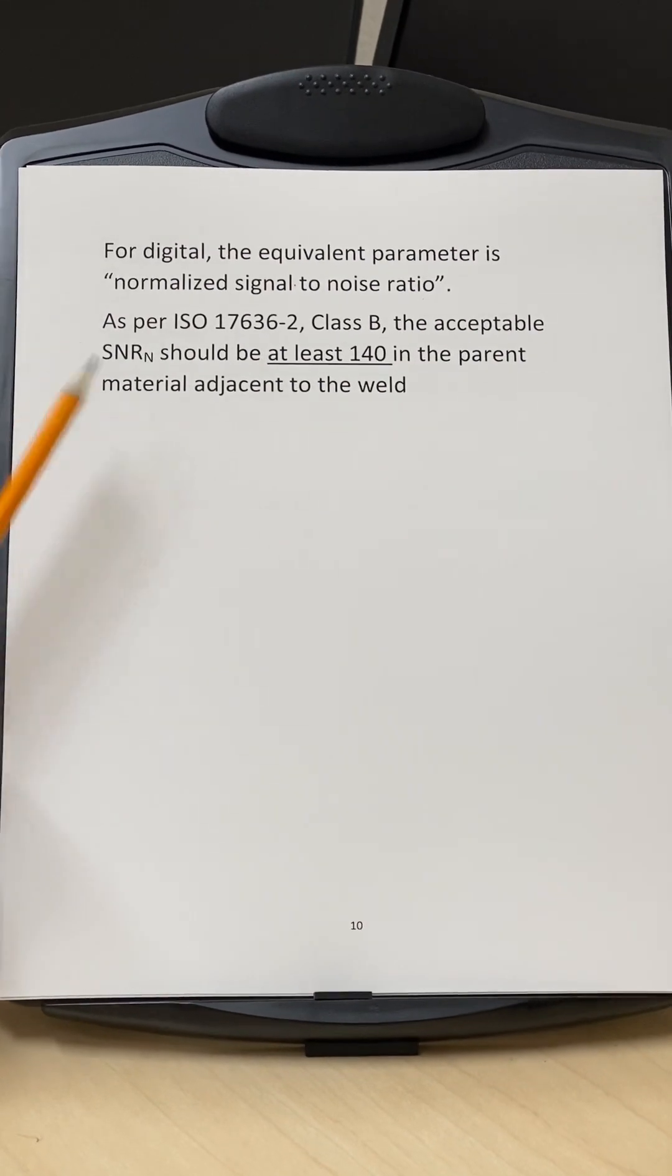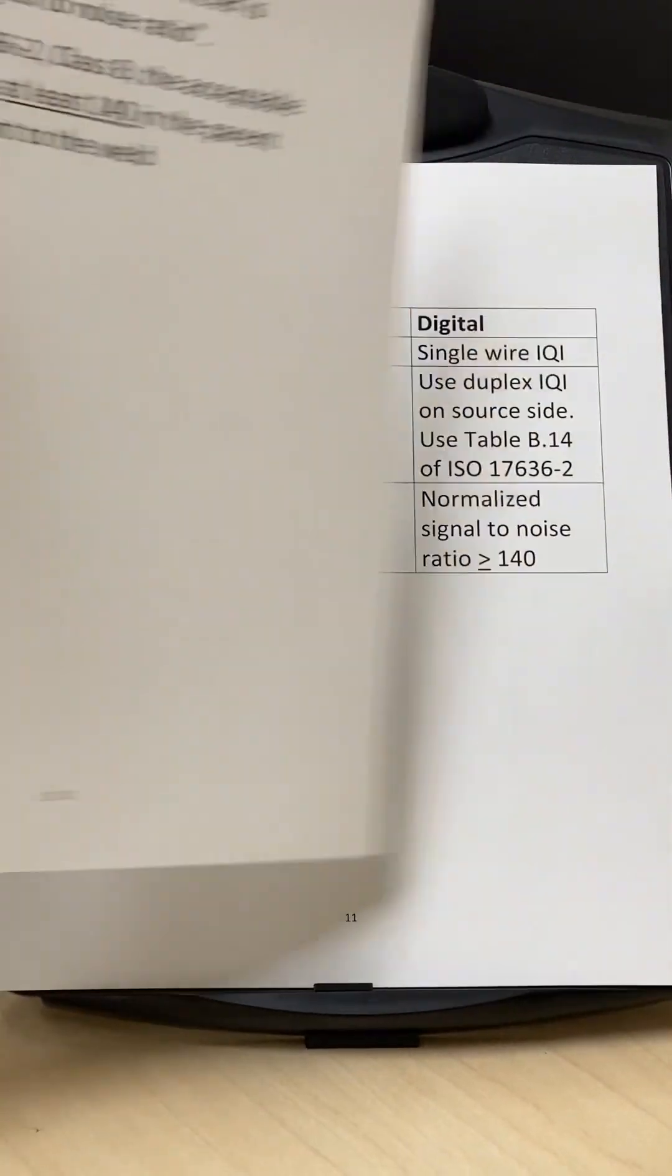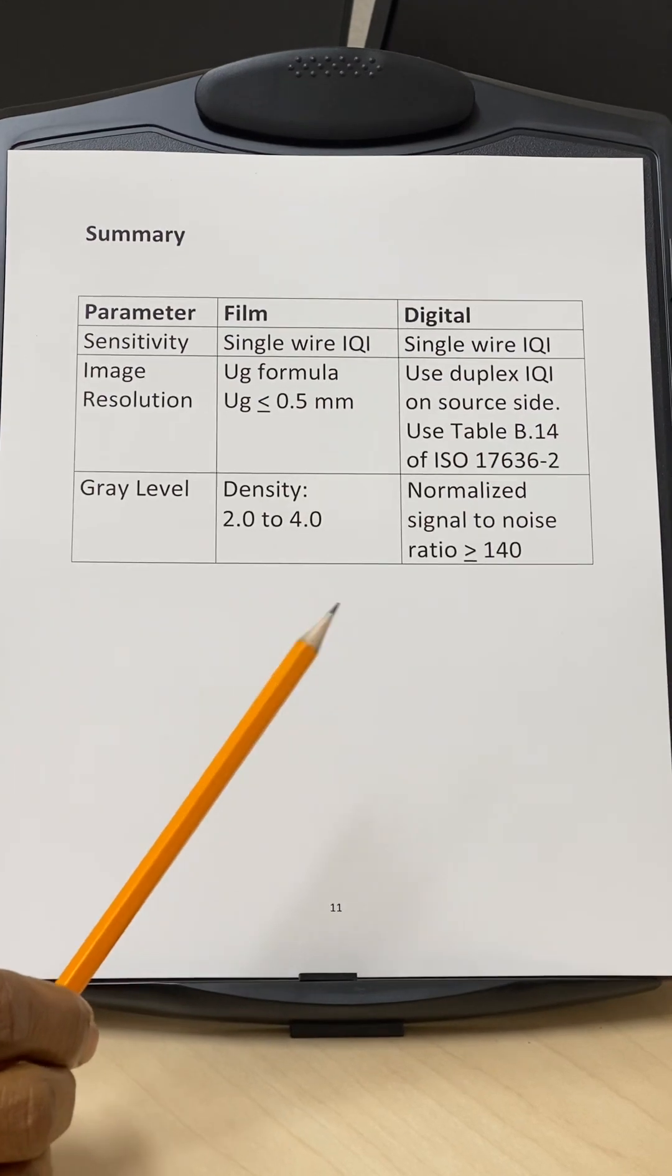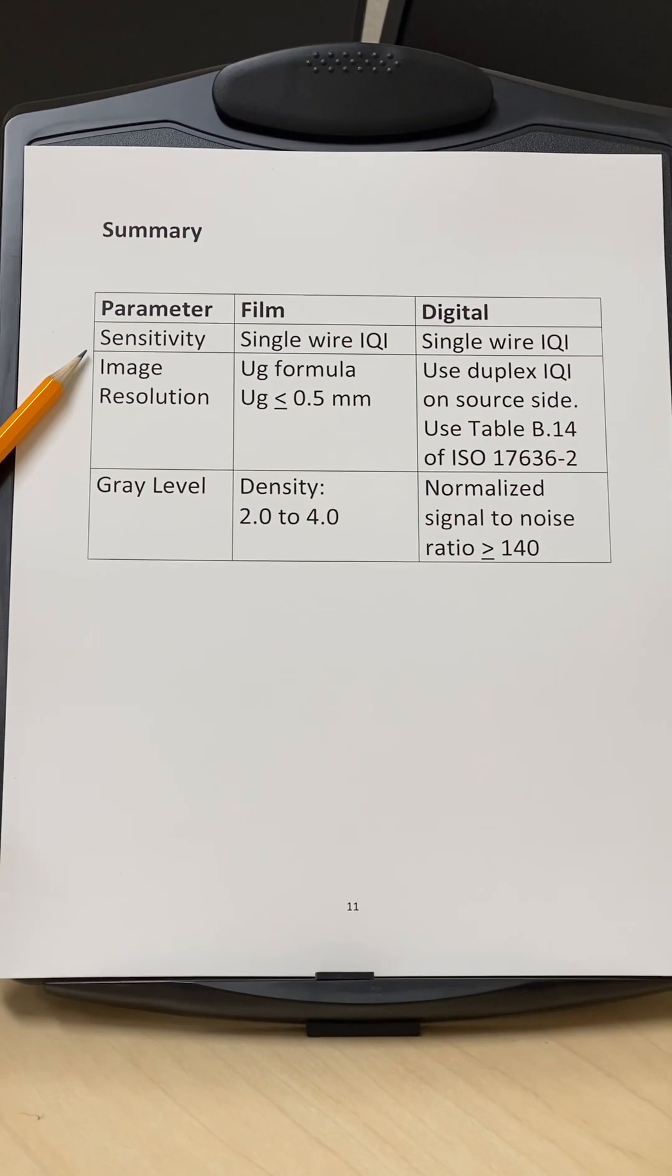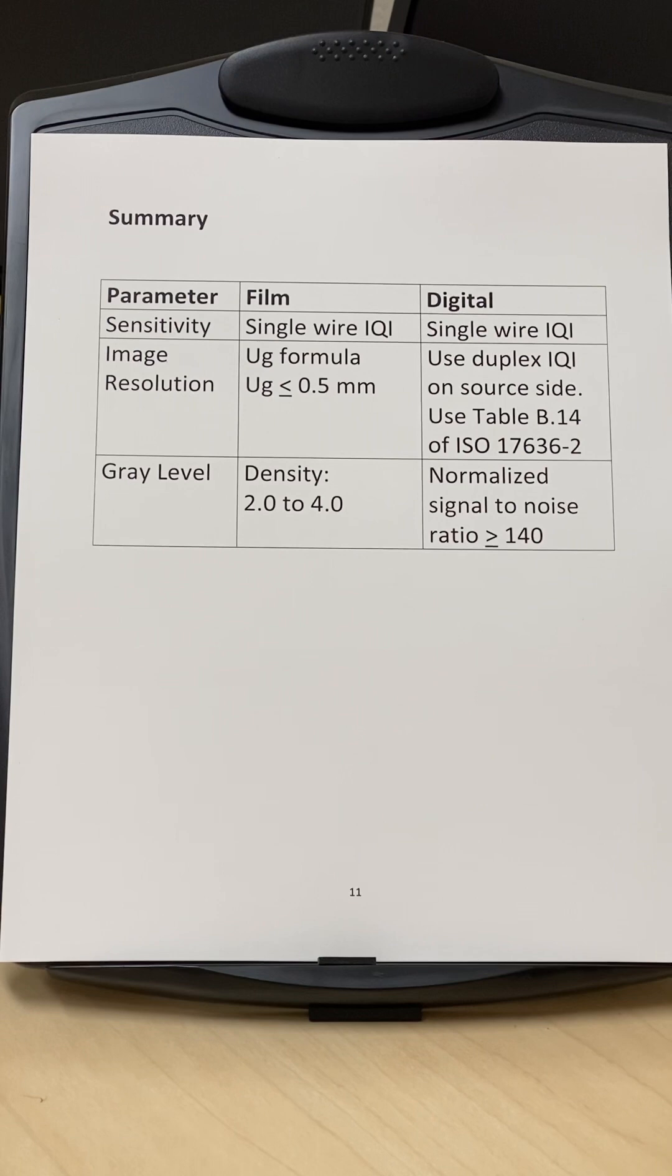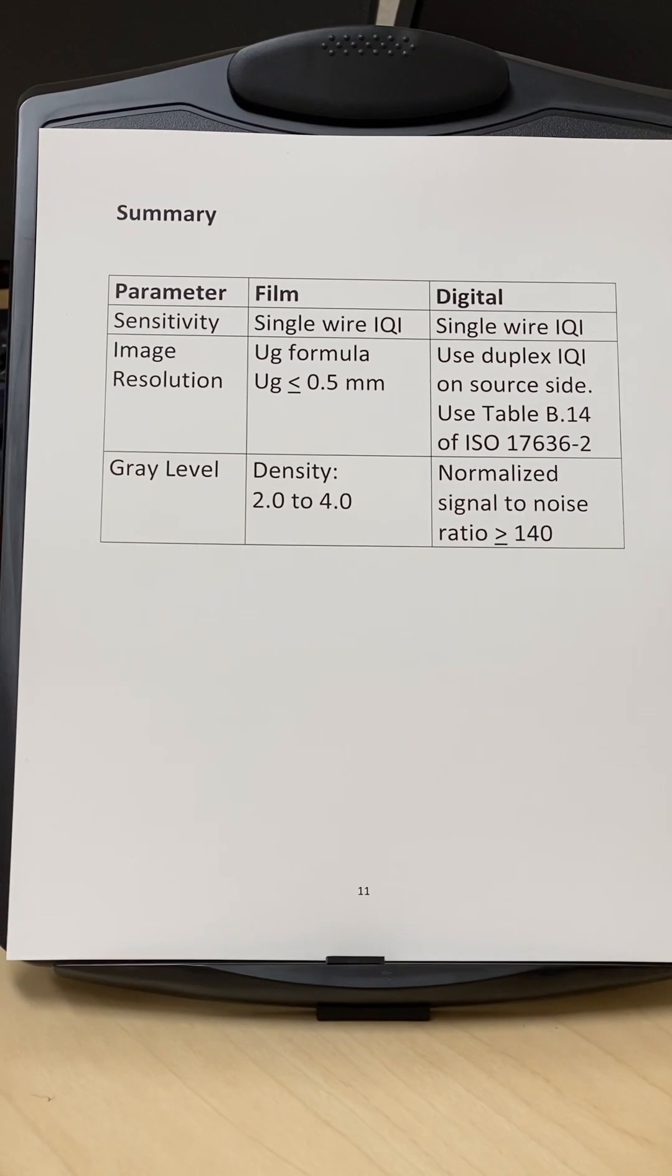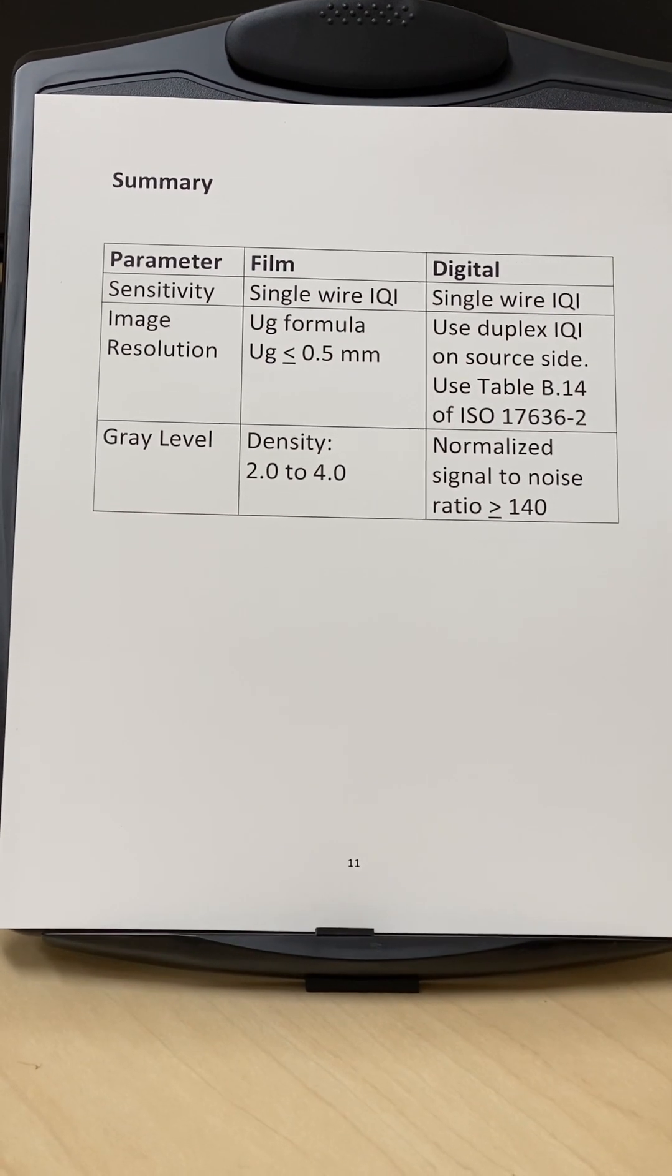So in summary, as far as the film and the digital is concerned, the sensitivity is the same. We use the same IQIs, whether you use the ASTM or the ISO, but it's still the same detection of the IQI. But there is a significant difference, and it's a major difference as far as the spatial resolution of the image is concerned.